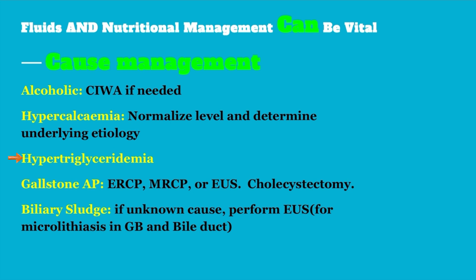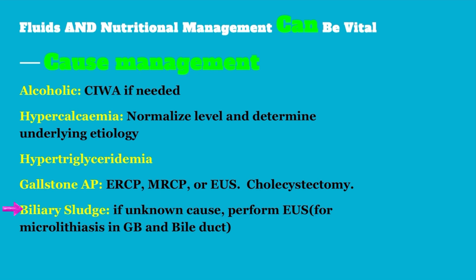As for hypertriglyceridemia, its management is different and sometimes requires insulin infusion. For gallstone acute pancreatitis, extensive imaging is needed — abdominal ultrasound, ERCP, MRCP, or EUS — and we consider cholecystectomy either during the hospital stay for mild pancreatitis, or electively after the acute inflammation resolves for moderate to severe pancreatitis. Biliary sludge can also cause acute pancreatitis, and if the cause of the sludge is unclear, EUS can be performed to look for microlithiasis in the gallbladder and bile duct.